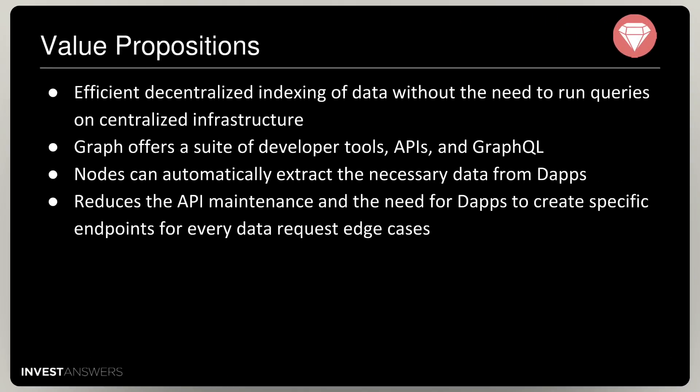Graph offers a suite of developer tools, APIs, and GraphQL that really allows requesters to easily and efficiently query data, create filters, and find the data they need. Nodes can also automatically extract the necessary data from dApps rather than the requester waiting on the dApp to build the API and request connections.